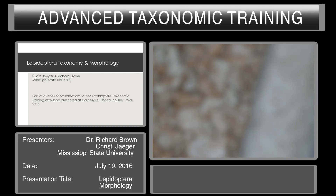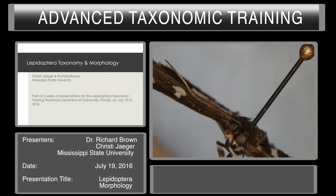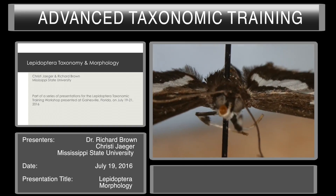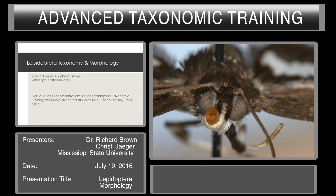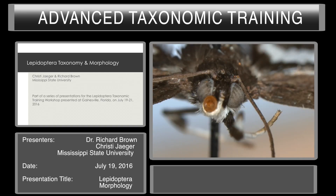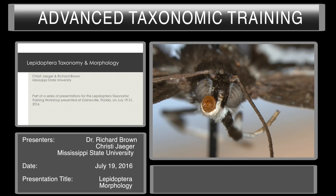Let's go to the next specimen, number four. We're going to look at it from the head end. I'm going to zero in on it. You see the compound eyes, you see the antenna. What other appendage do you see? The proboscis. Is it scaled? A scaled proboscis. So what's the family? Pyraloidea — super family. It could be a Crambid but it's a little bit large for a Crambid and it lacks some of the other characteristic characters.